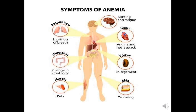Whenever a person has anemia, the major symptoms and complaints include shortness of breath, change in the color of the stool, pain, weakness, fatigue, possibly cardiac problems, a palpable spleen, and the skin color — the person appears pale.